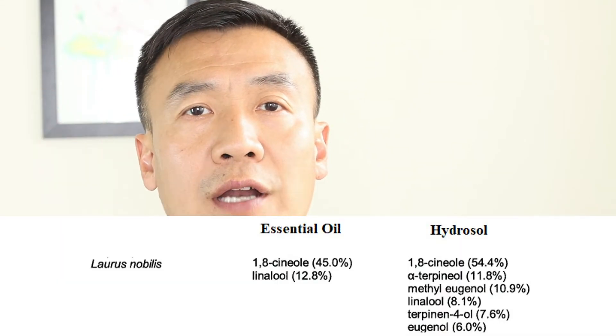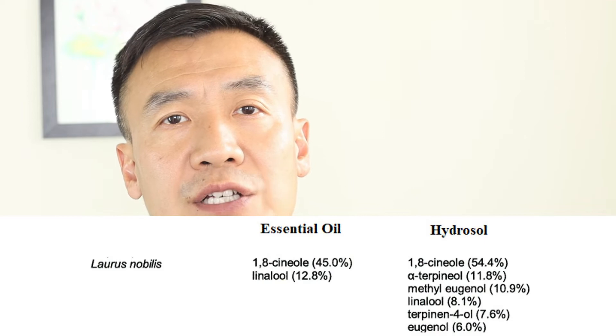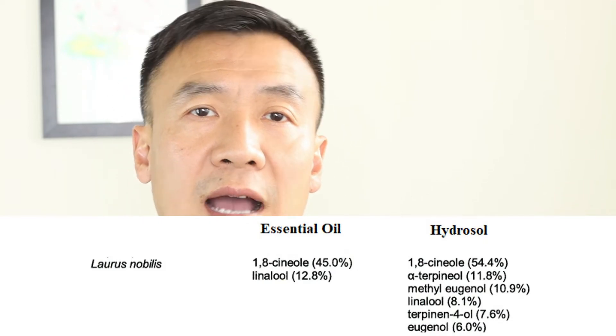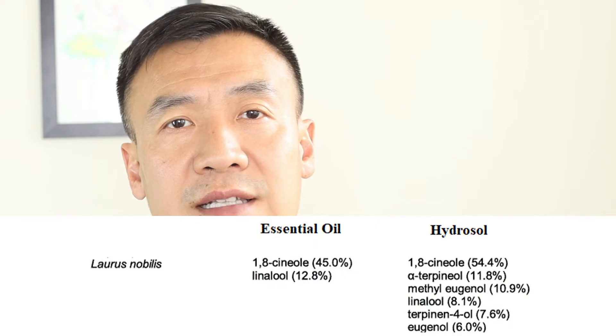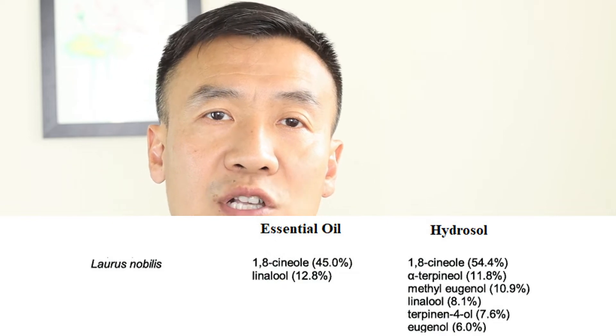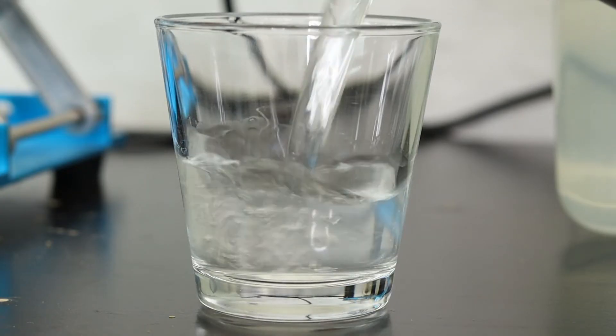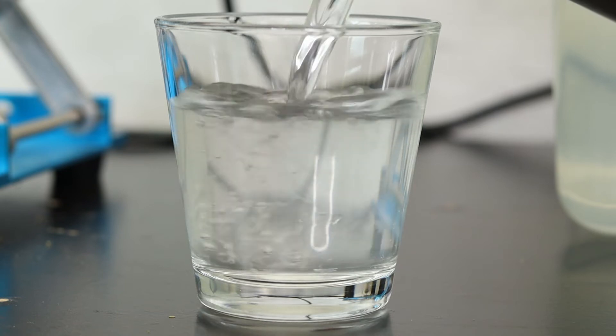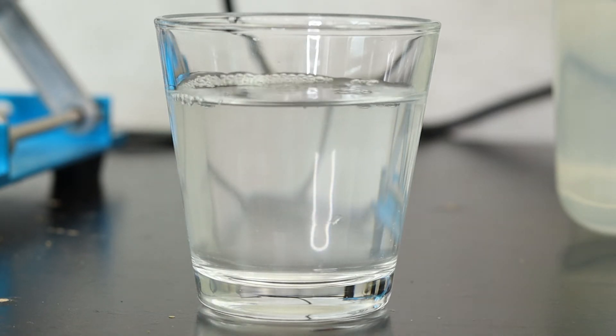Hydrosol is also called a flower water or water distillate. It is made during the distillation with essential oil. It has a similar chemical composition with essential oil, and this table shows you the chemical composition of bay leaf essential oil and hydrosol. Both of them have 1,8-cineole as the main compound, but hydrosol has different chemical concentrations compared to its essential oil. Hydrosol has dissolved chemicals from essential oil, and essential oil comes out after it saturates the hydrosol.